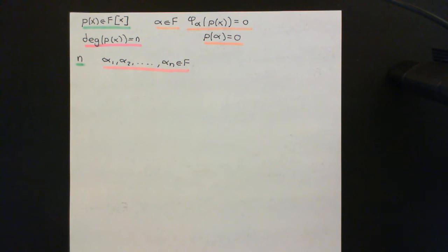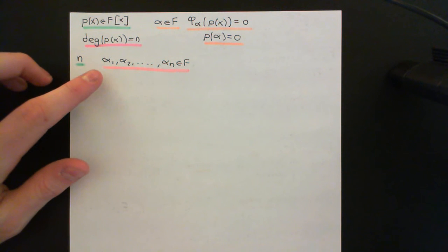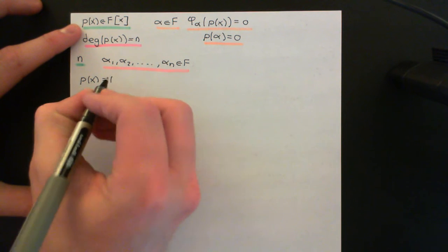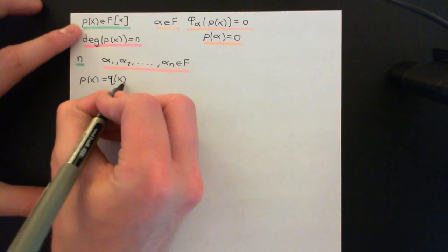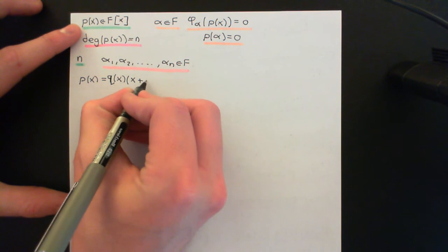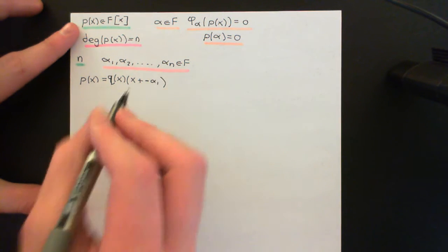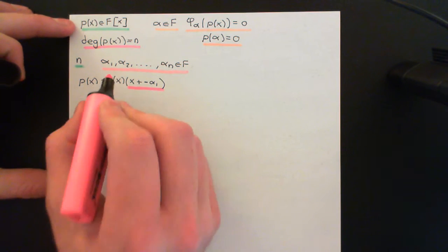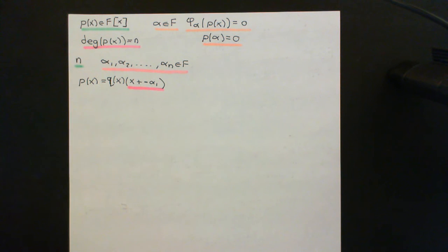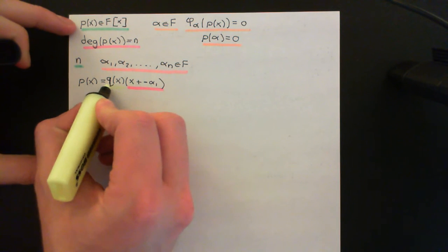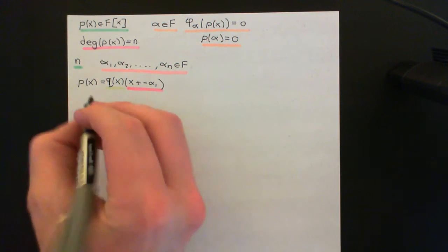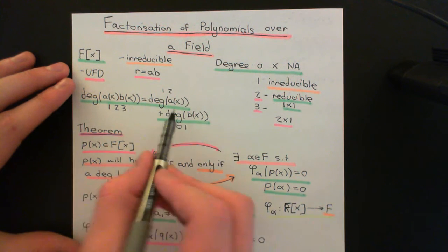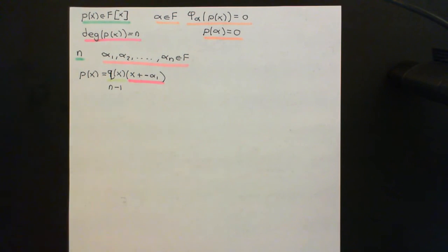From what we've discussed, taking root alpha 1 we can write p of x as q of x times (x plus the additive inverse of alpha 1). This degree 1 polynomial will always exist since all elements in the field have an additive inverse. The polynomial q of x will have degree n minus 1, because of the degree formula that always holds in an integral domain's polynomial ring.